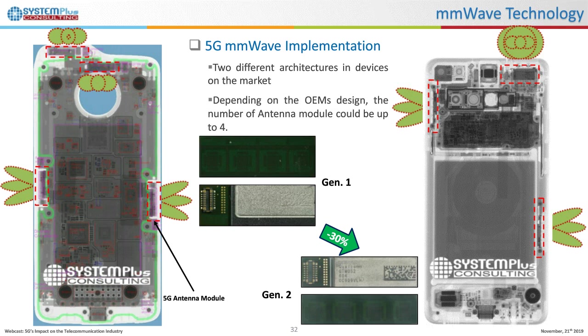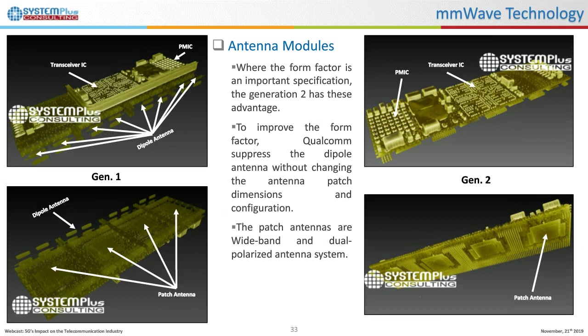The main difference between the two generations is that in the first one, a dipole antenna was integrated in the antenna-in-package. Tomographic X-ray revealed the whole structure of the component and antenna. We identified the precise structure of the antenna patches — a wideband dual-polarization antenna system — and showed that the isolation structure between patches has been improved between the two module generations.